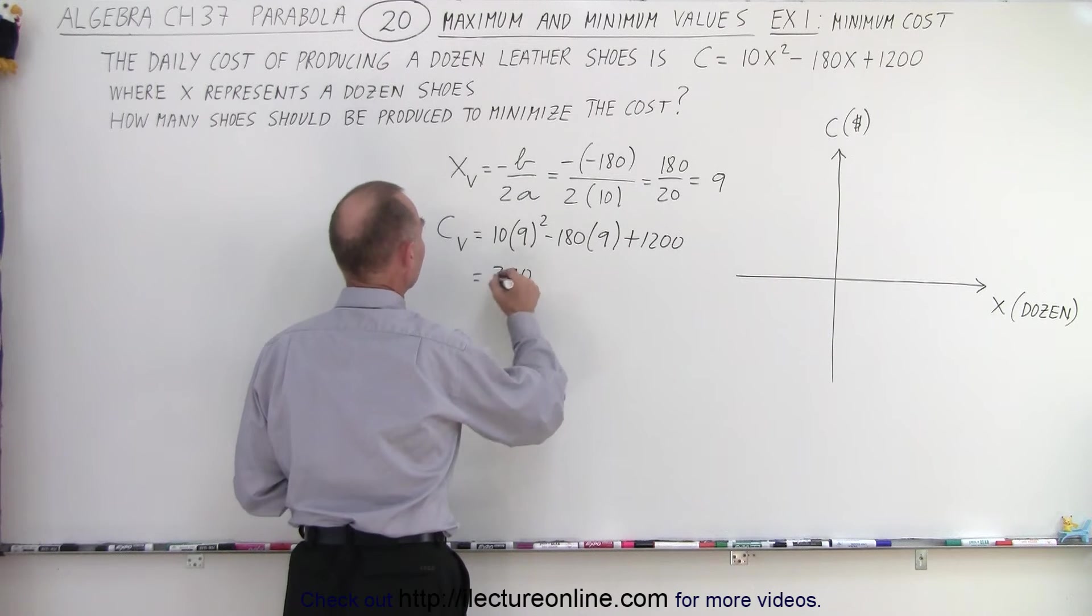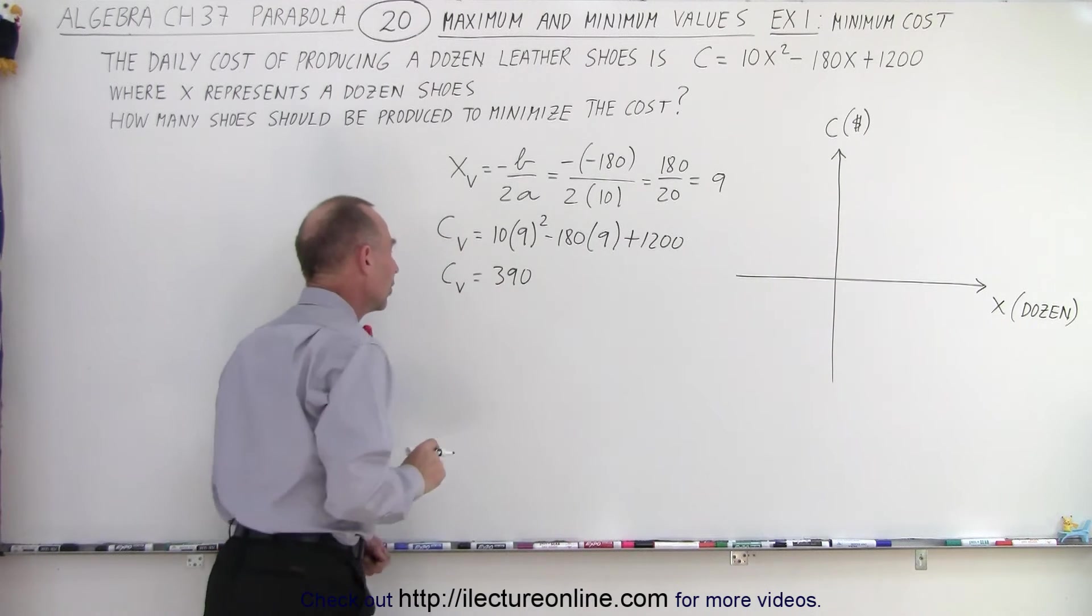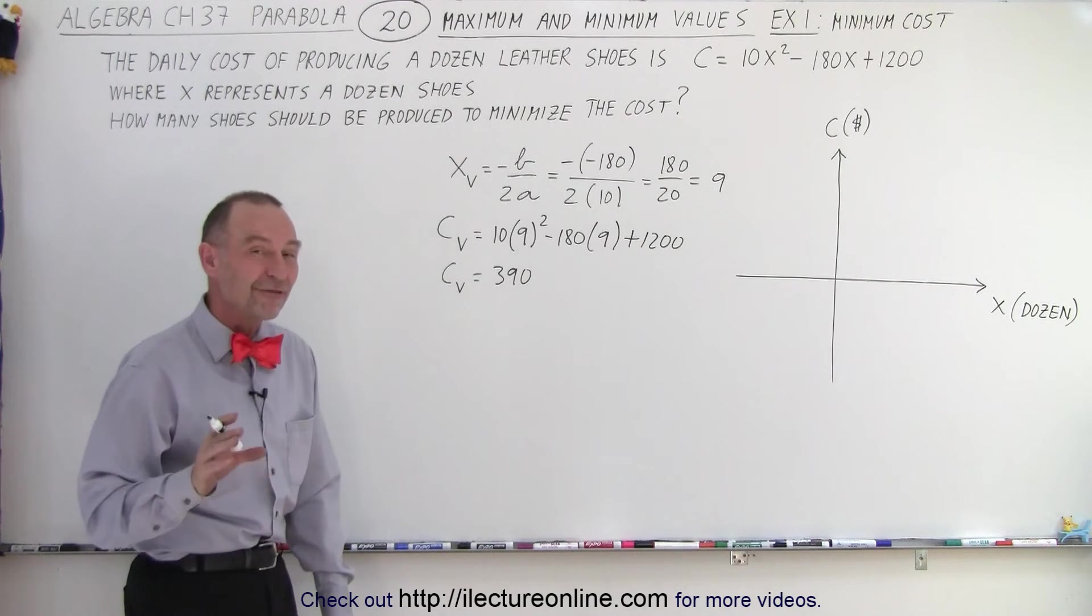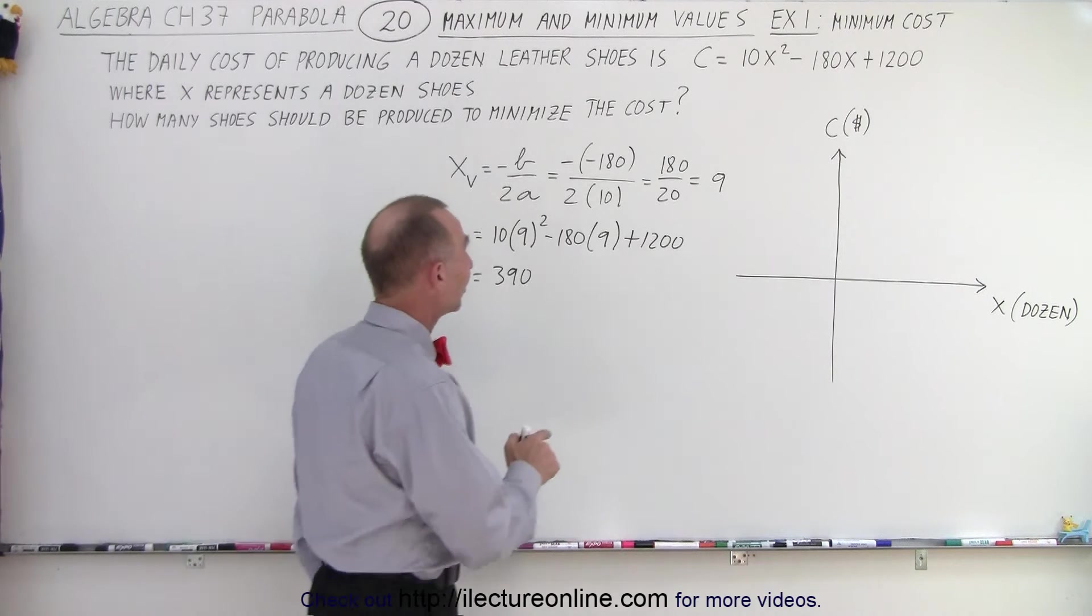So, 390 is the c, not the y-coordinate, but the c-coordinate of the vertex. Let's go ahead and find that. So, when x equals 9, so we'll put that right over here, 9.